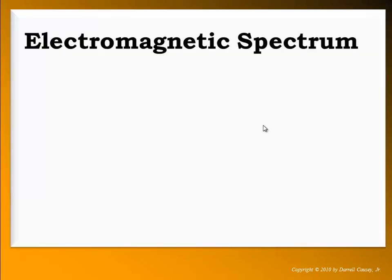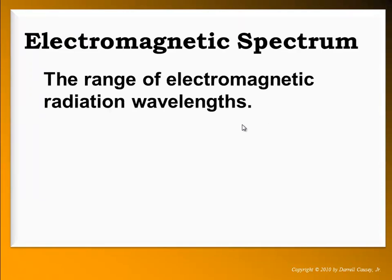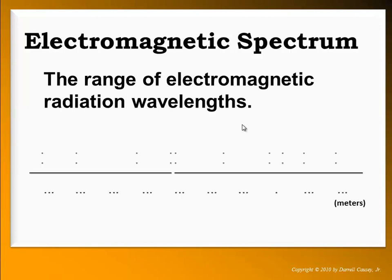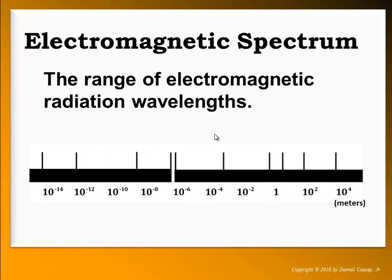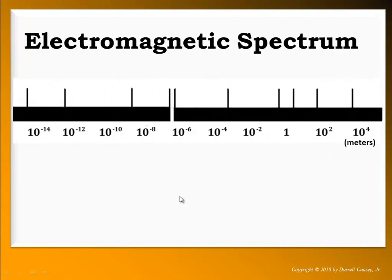What is electromagnetic radiation? The electromagnetic radiation spectrum is the range of electromagnetic radiation wavelengths or frequency. The electromagnetic spectrum goes all the way from gamma rays to AM and FM radio waves.